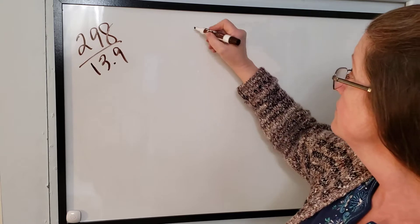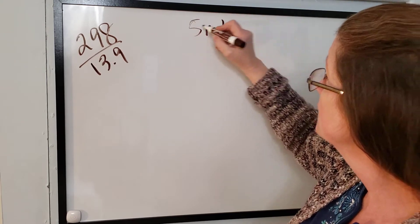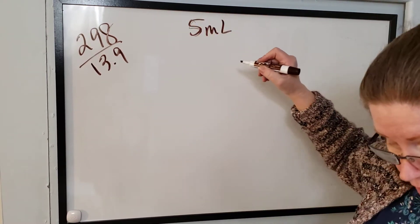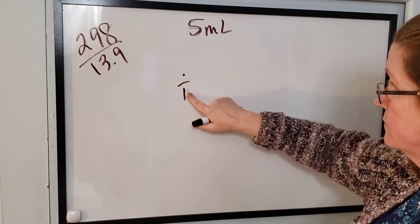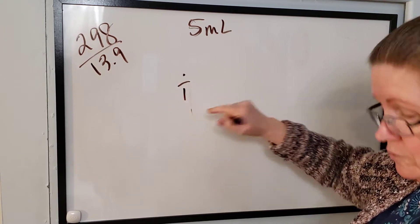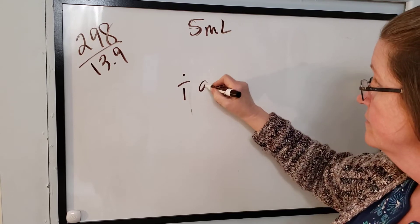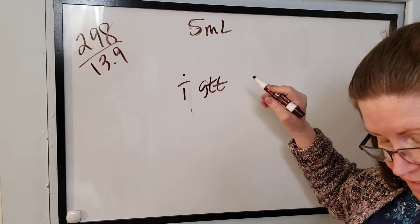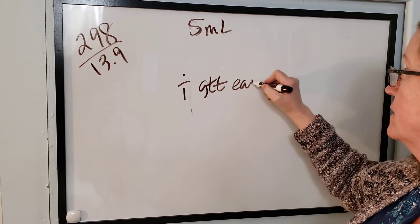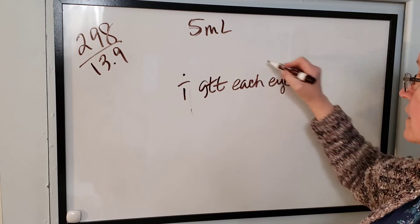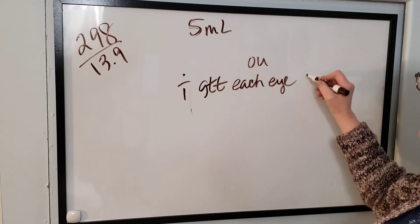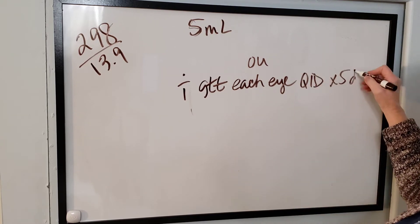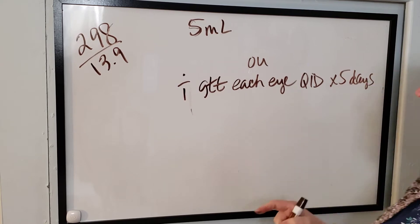So the directions are it's five mLs. And the directions are one drop. And then I wrote two, one drop GTT gotitas in each eye. And that abbreviation is actually OU, but they spelled it out QID times five days.